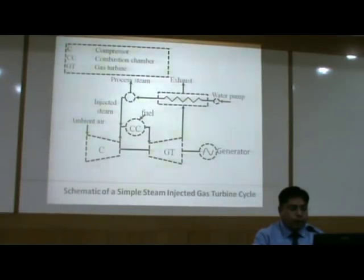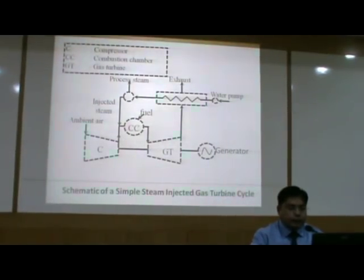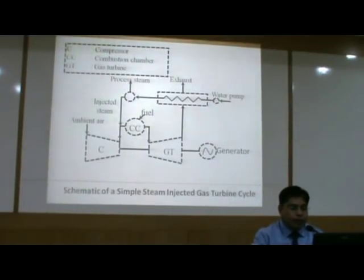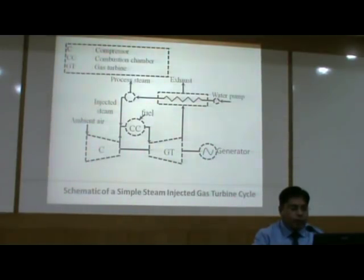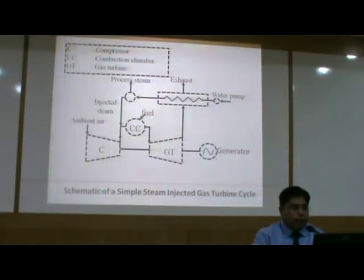This figure gives you a schematic of a simple steam injected gas turbine. You may observe that a water feed pump is feeding water which passes through the HRSG. The HRSG is getting heat from the exhaust of the gas turbine. The steam generated in the drums located in the HRSG is fed into the combustion chamber, and a portion of the steam may be taken out for process heating.